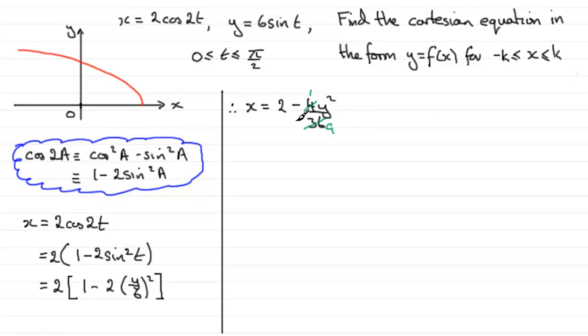You could cancel by 4 here. So you've got 1 there and 9 there. And now you could multiply both sides by 9. And you get, therefore, 9x equals 2 times 9 or 18. And then minus y². So we could make y² the subject. Just add y² to both sides and subtract 9x from both sides.